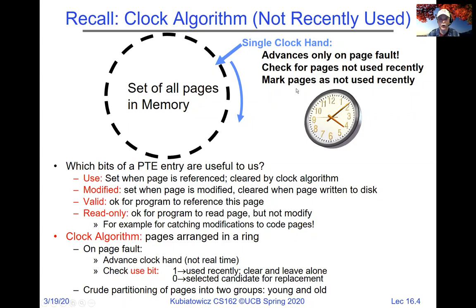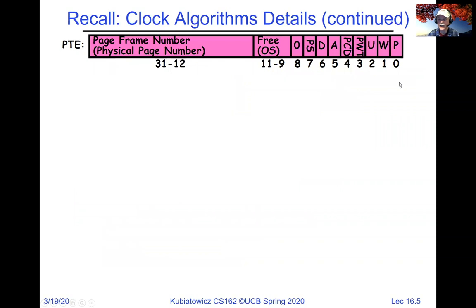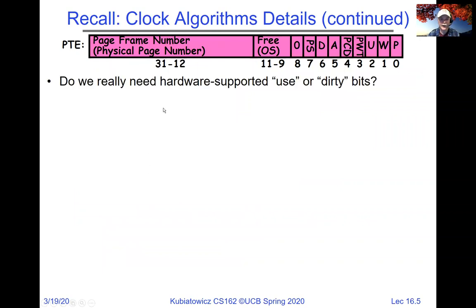The advantage of clock over LRU is that the clock algorithm is very inexpensive — all we do is link pages together and traverse them one at a time checking use and modify bits. True LRU would require tracking every load and store and continuously reordering all pages to find the actual least recently used, which is far too expensive. So the clock is a practical approximation. Now, looking at the PTE: we have the dirty bit, the accessed/use bit, the writable bit, and the valid bit (P). Do we really need the use and dirty bits in hardware?